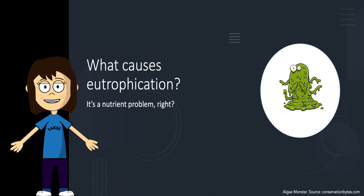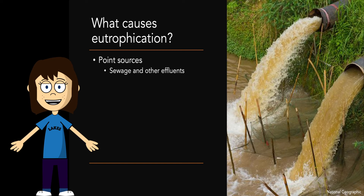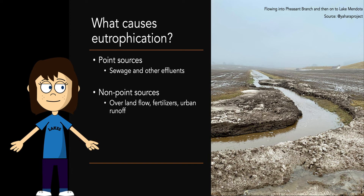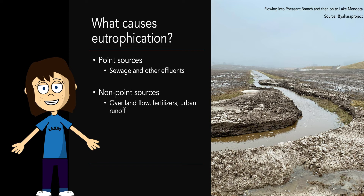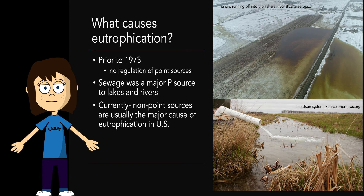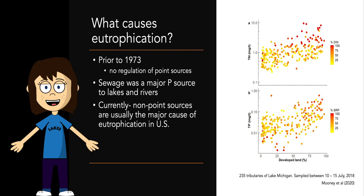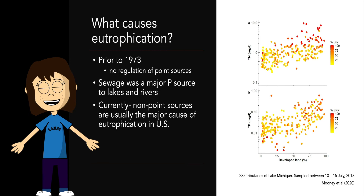So what causes eutrophication? We're putting too many nutrients into our lakes in a variety of ways. One is from point sources — sources limited to a discrete spot, such as sewage or other effluents coming from pipes draining into a lake or river. We also have non-point sources, which are more disperse and include overland flow from things like agricultural fertilizers or urban runoff. Prior to 1973 there was no regulation on point source pollutants, and sewage was a major phosphorus source to lakes and rivers nationwide. Thanks to regulation, we've significantly decreased nutrients in sewage. Currently, non-point sources are usually the major cause of eutrophication in the United States, often correlated with the amount of agricultural and developed land in a watershed.